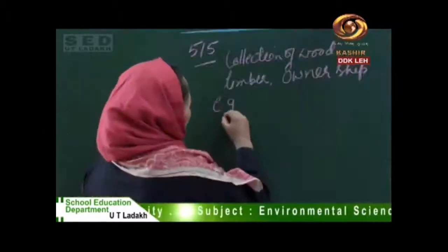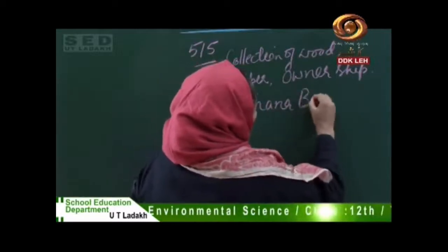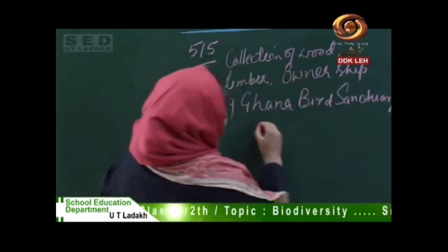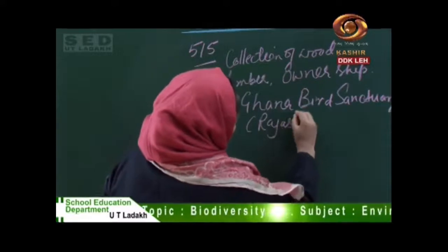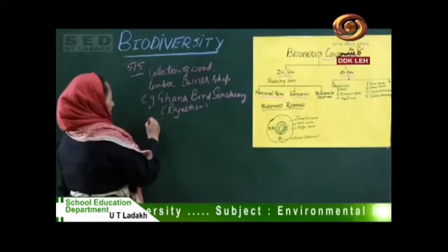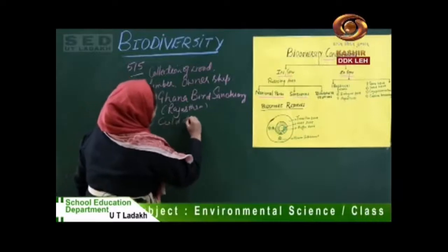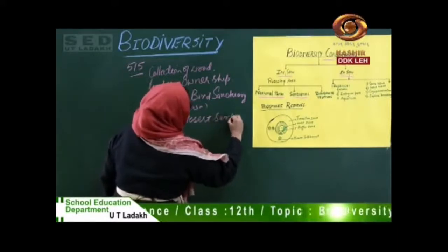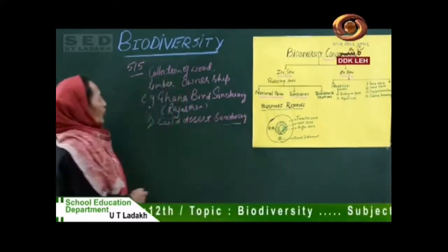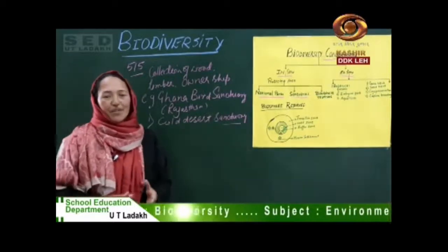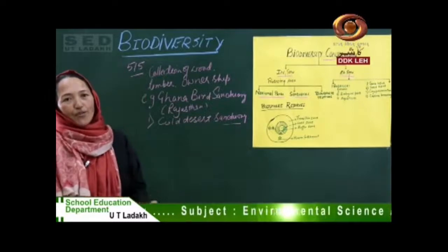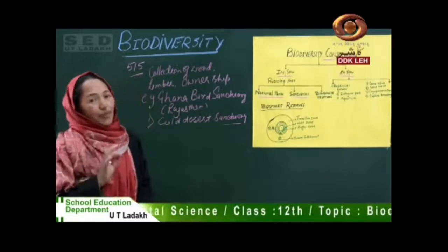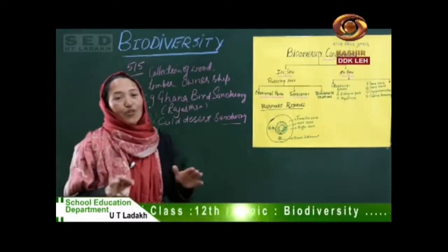For example, Ghana Bird Sanctuary is in Rajasthan. The second example is the Changthang Cold Desert Sanctuary. As we all know, in Changthang Sanctuary, human settlement is present, collection of firewood is allowed, and private ownership is also allowed.